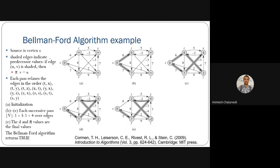In the example, the source node is initialized to zero and all other vertices to infinity. We need to find predecessors for vertices t, x, y, and z. We execute four passes (five minus one) over all ten edges. In the first pass, most edges involve infinity, so no updates occur initially.